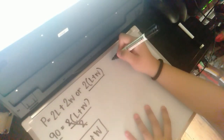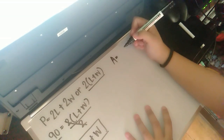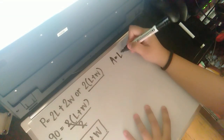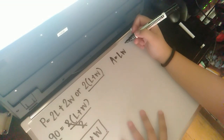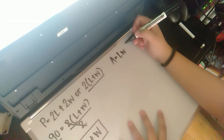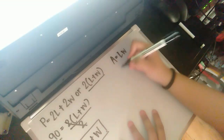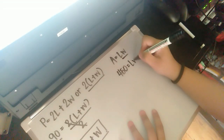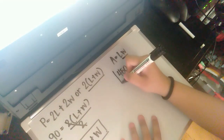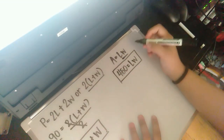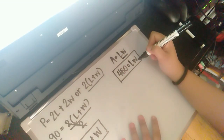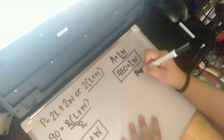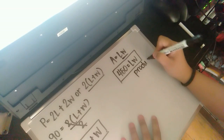Next, let us use the formula for the area of a rectangle. Area equals length times width. The area given in the problem is 450 square meters, so we substitute: 450 equals length times width. Since length times width is a multiplication operation, we can consider the value 450 as the product of the roots.